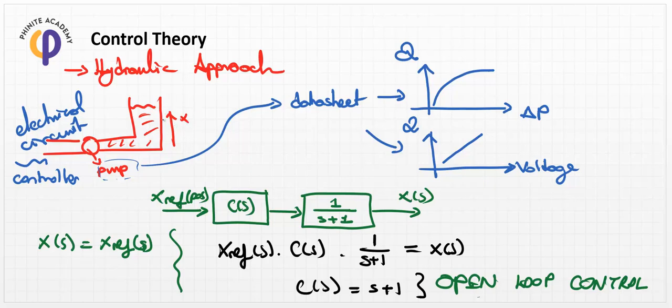How can we be sure that x is at the right position matching x_ref? We need to use sensor applications. In the theoretical controller approach, we should use a feedback signal. In the next lesson, we will talk about how to create a feedback control loop — what we call closed-loop control — in our system dynamics modeling.